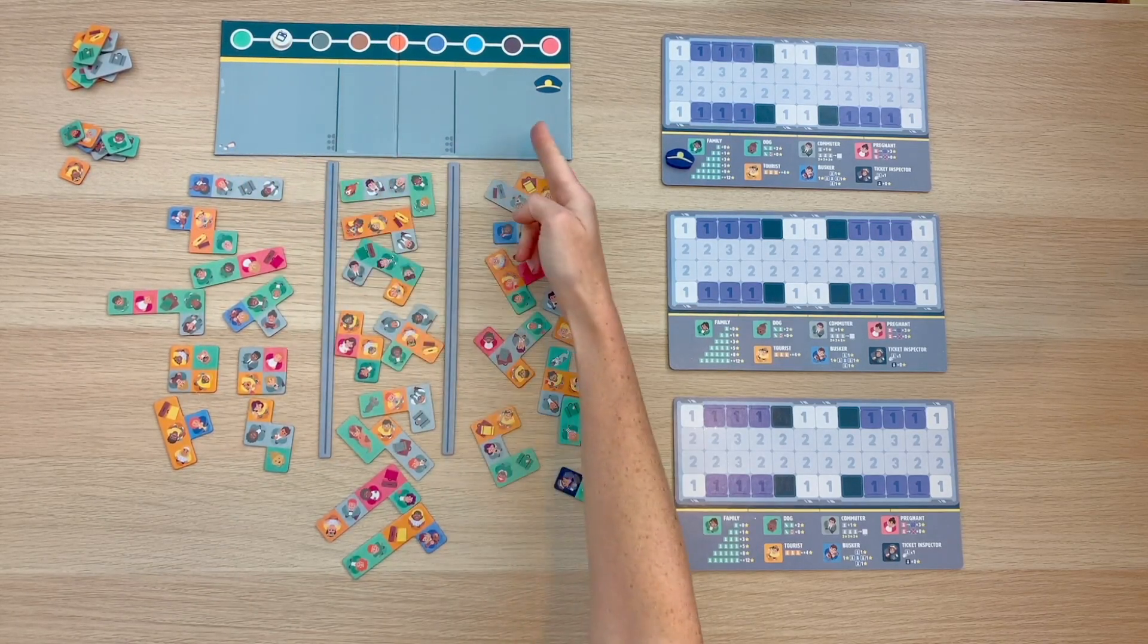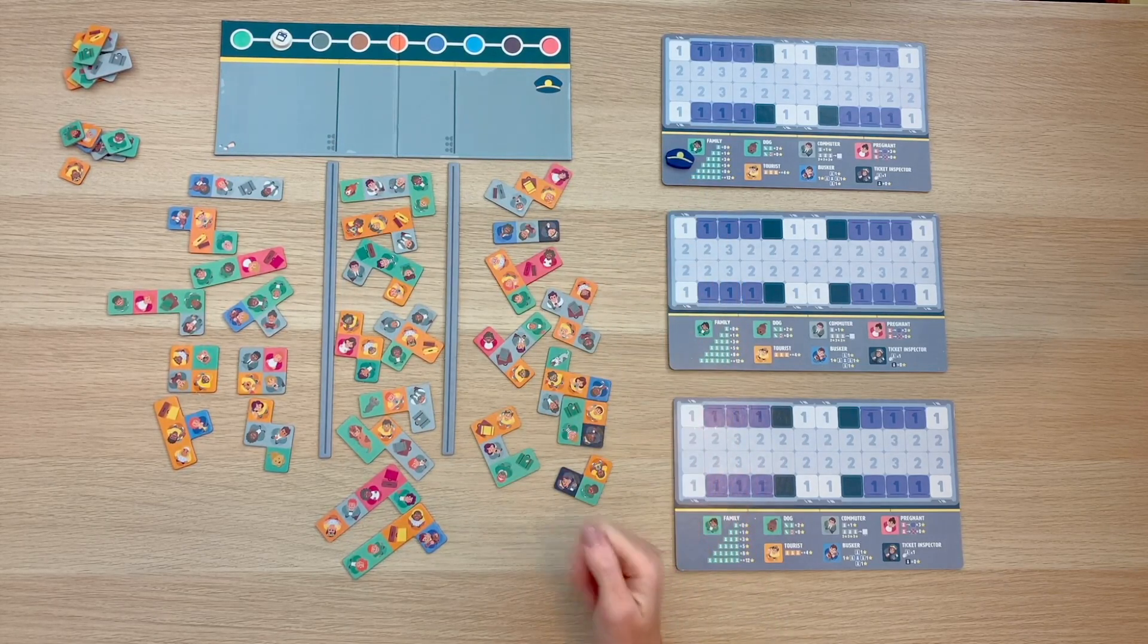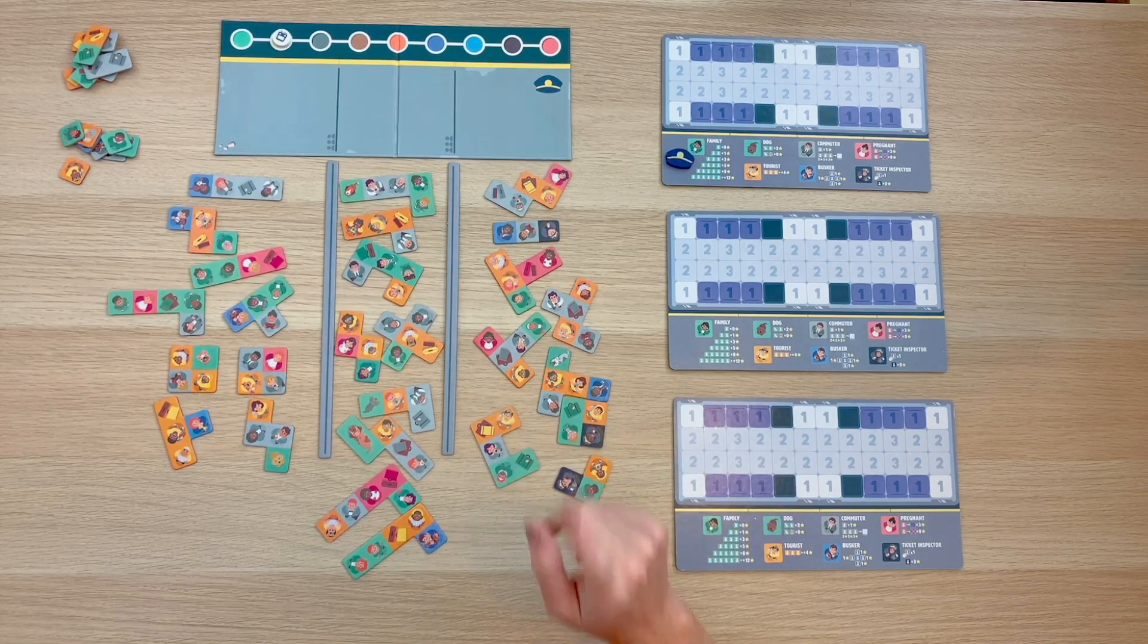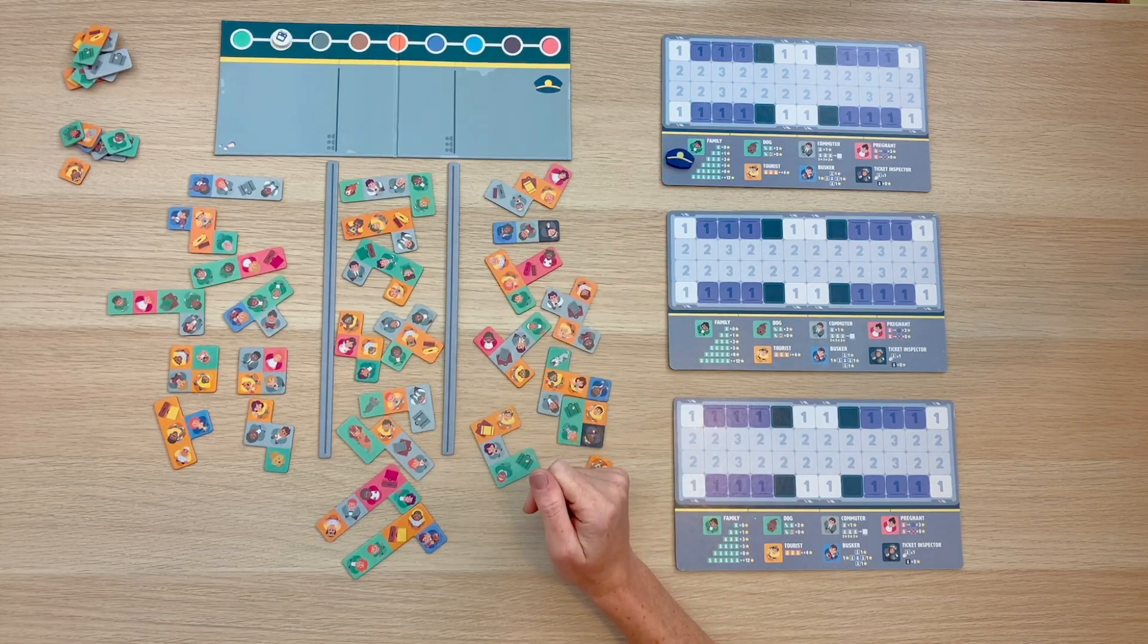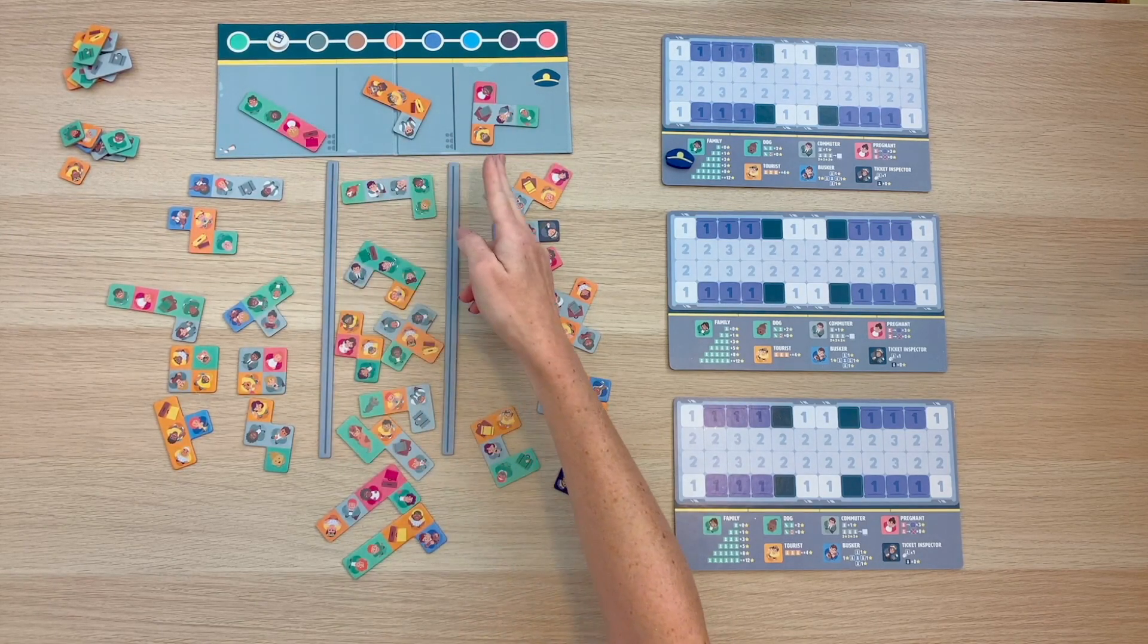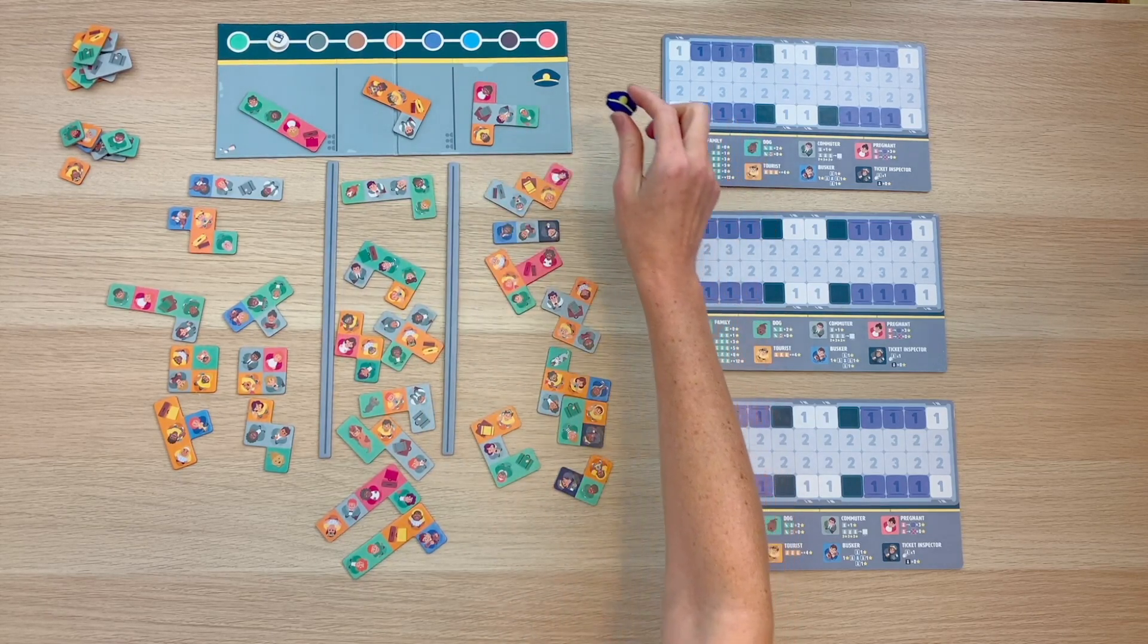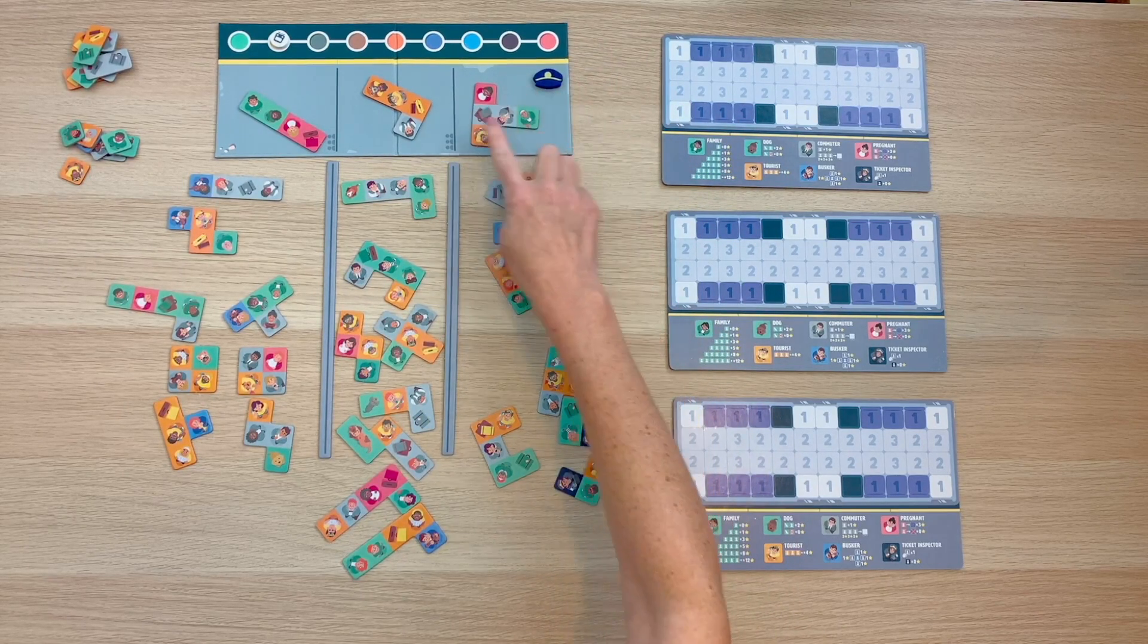Next up, it's time to fill our platform with passengers. Whoever is holding the conductor token will now pick any piece they wish from each corresponding section of the platform. Just keep in mind, if you're the conductor, you're going to be the last person who picks a piece from the platform. This is going to ensure a nice array of passengers to choose from. Once the conductor has chosen a passenger from each corresponding queue line and placed them on the platform, they can simply return the conductor hat to the icon located on the platform board.